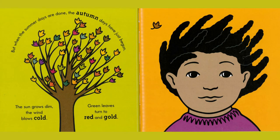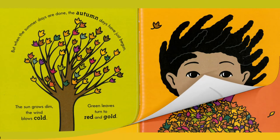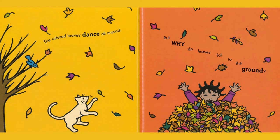But when the summer days are done, the autumn days have just begun. The sun grows dim, the wind blows cold. Green leaves turn to red and gold. The colored leaves dance all around, but why do leaves fall to the ground?